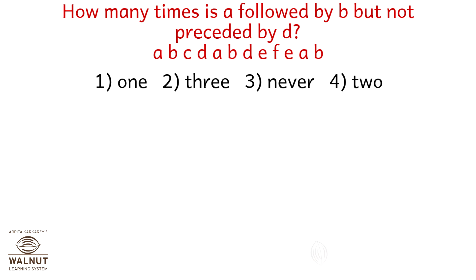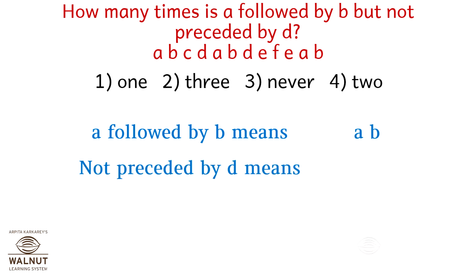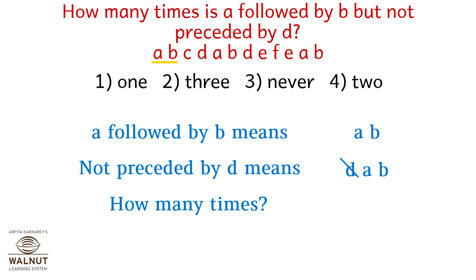How many times is A followed by B but not preceded by D? A followed by B means 'AB'; not preceded by D means 'DAB' should not occur. Checking through the given sequence: one instance here, one here, one instance where D precedes AB — excluded — and one more valid instance. So AB not preceded by D occurs two times. The correct answer is option four, two.